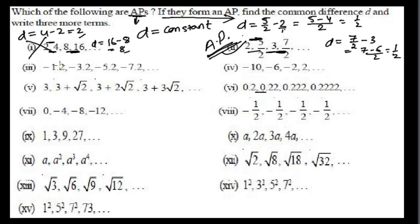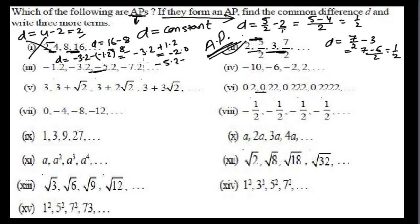For the third one, the first term is -1.2 and second term is -3.2. The common difference is -3.2 minus (-1.2), which gives -3.2 plus 1.2 equals -2. Checking the next pair: -5.2 minus (-3.2) equals -2 again. Since the common difference is the same, this is an arithmetic progression.